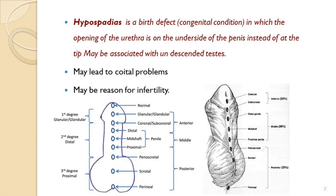Another finding in clinical examination is hypospadias — a congenital birth defect or structural abnormality of the urethra. Instead of the glans penis, the urethral opening is on the dorsum of the penis. This may lead to coital abnormalities, and these patients often have poor semen quality and difficulty in depositing semen in the female genital tract.